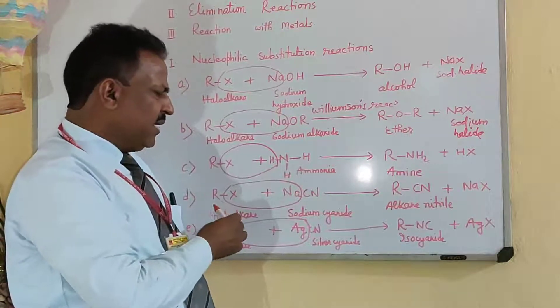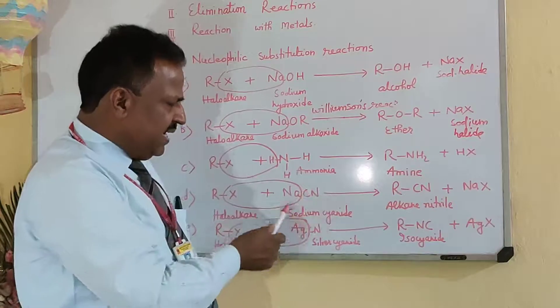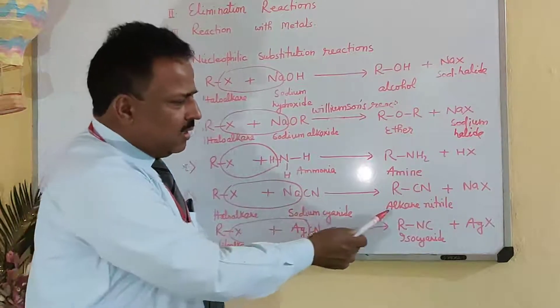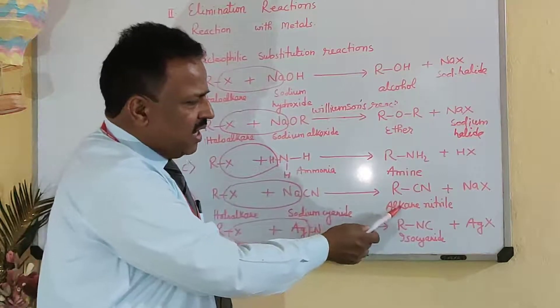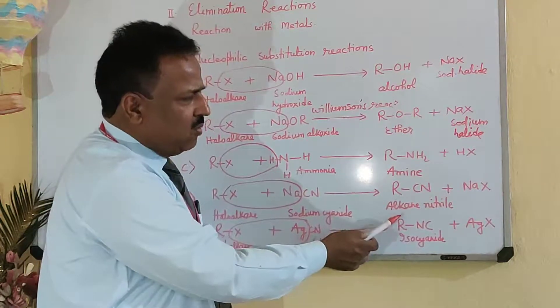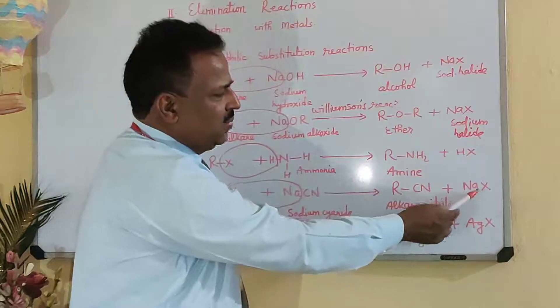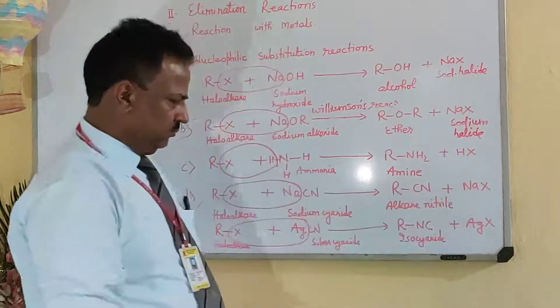D. When RX reacts with sodium cyanide (NaCN), then alkyl nitrile is formed, with sodium halide as the byproduct.